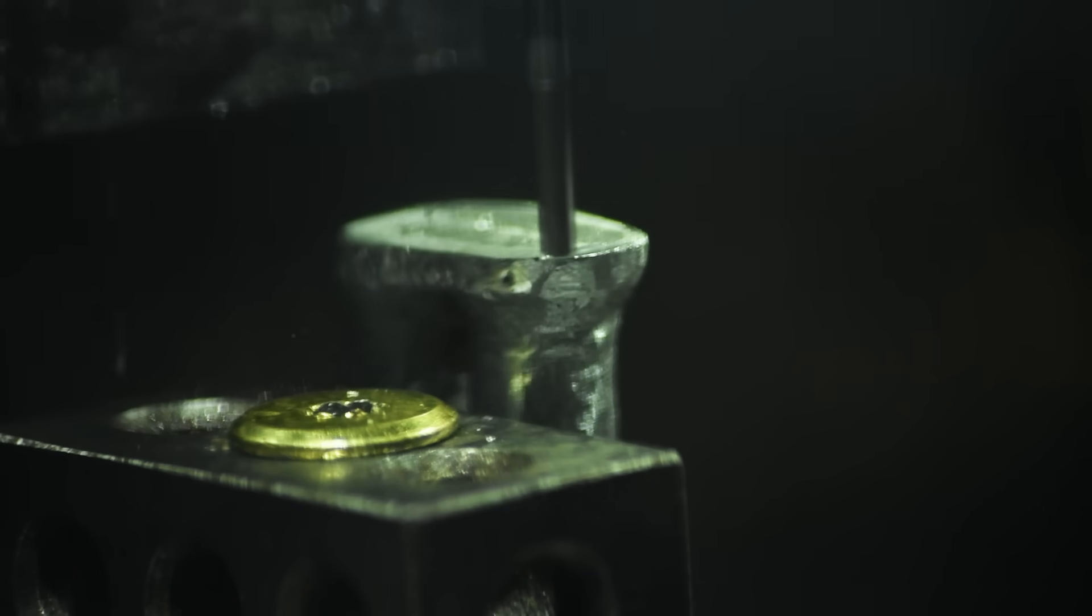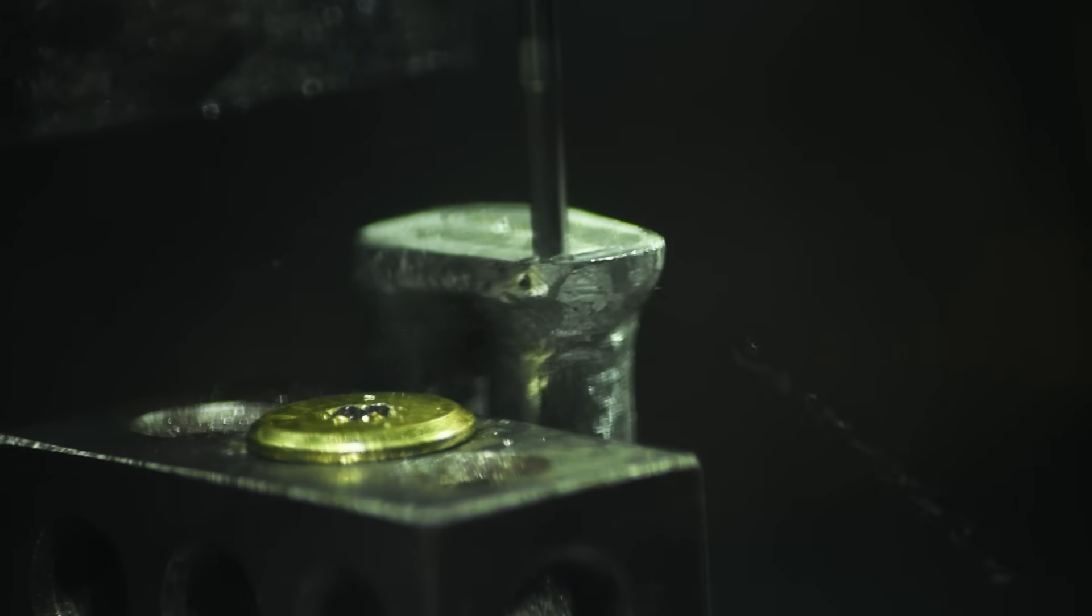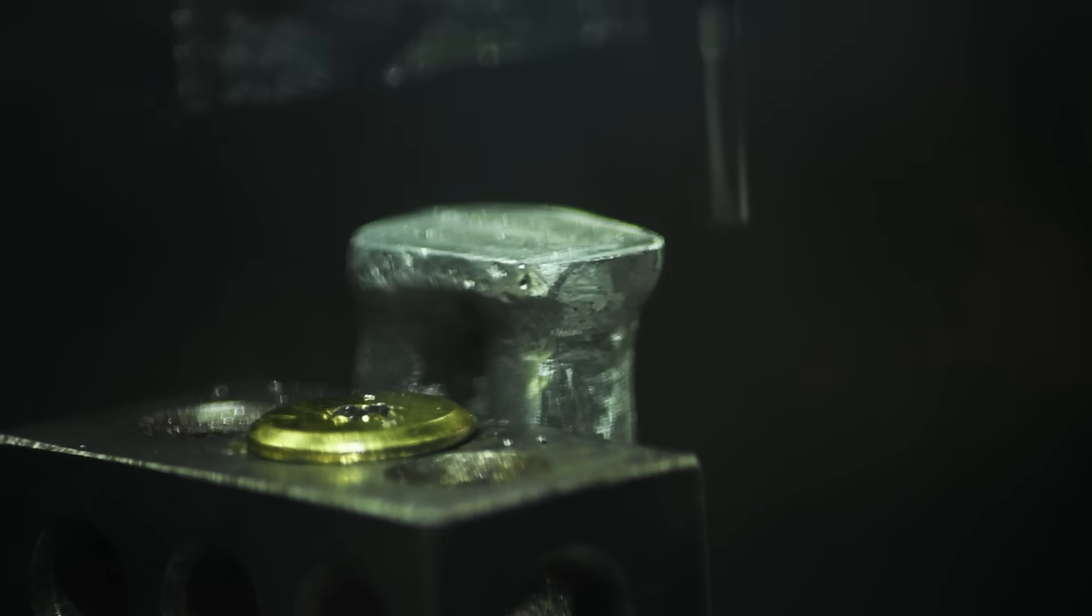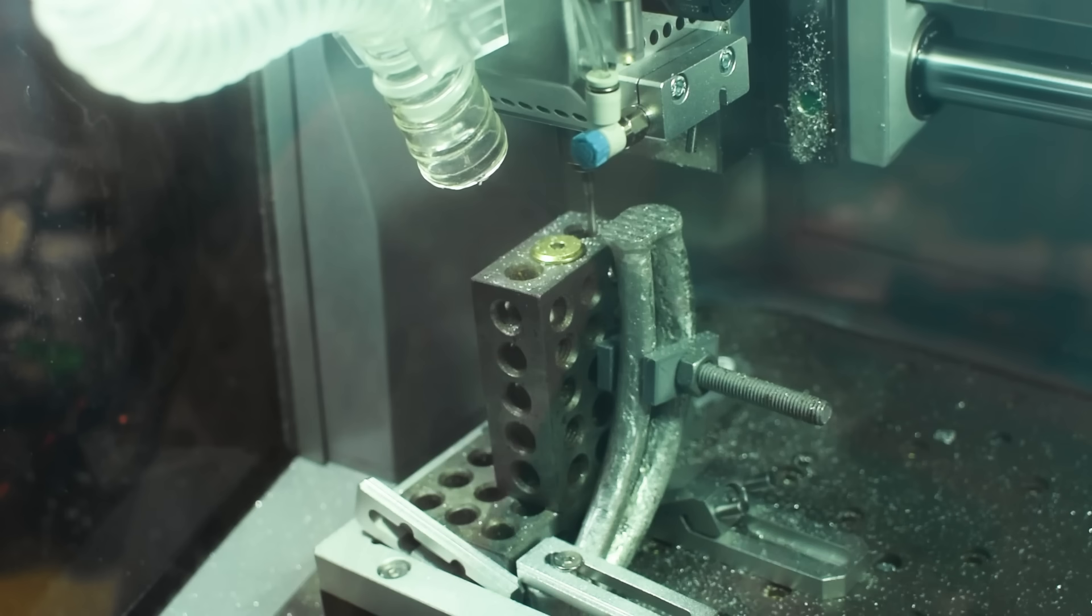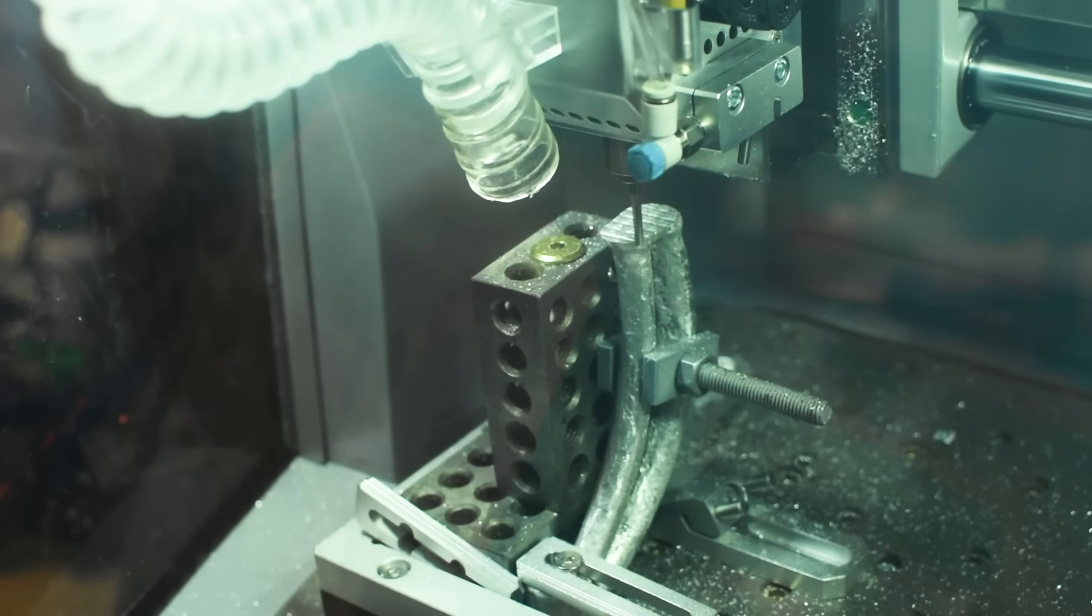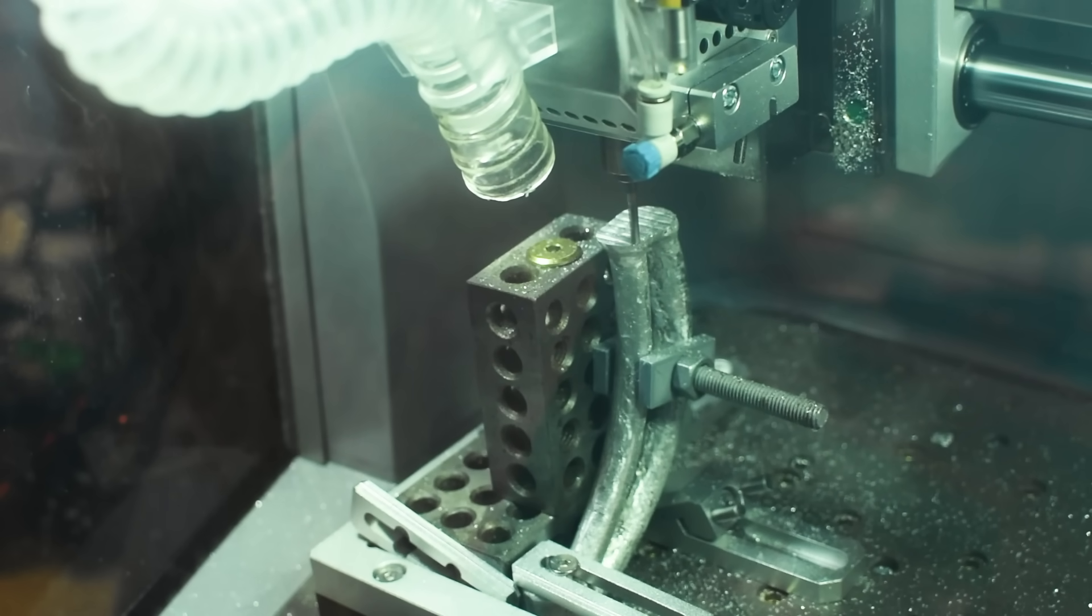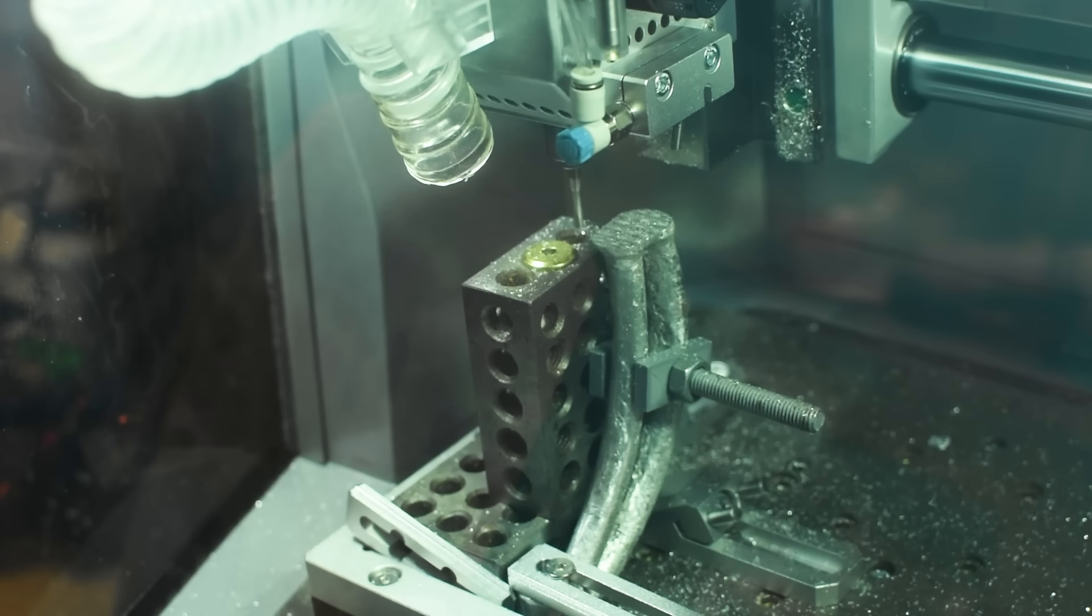Now with the top faced and bored, I could flip the part and use that new face as a reference for the base. Bolting it down, I again used some 123 blocks for extra support, before facing and boring the bottom of the arm.